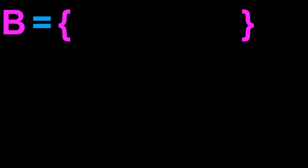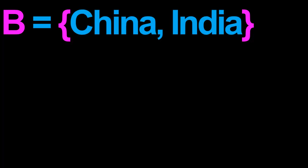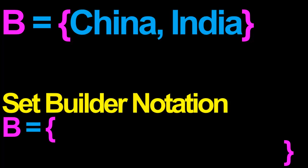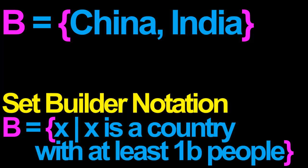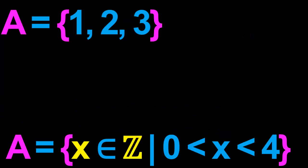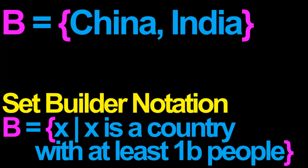Here's another example. Suppose the set B consists of all the countries with at least 1 billion people — so that's China and India. In set builder notation, we can write the set B as being the set of elements x which satisfy the property that x is a country with at least 1 billion people. In contrast to our previous example, in this example of the set B, to the left of the vertical bar, we do not restrict what x can possibly be — x can be anything whatsoever.